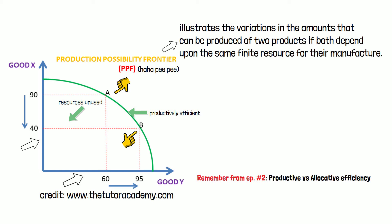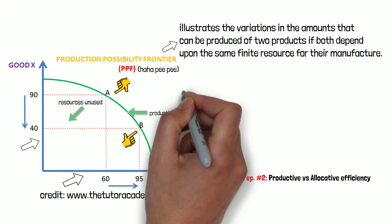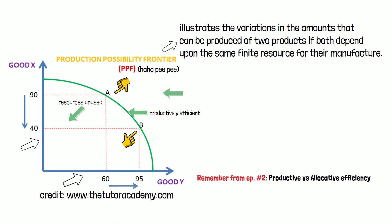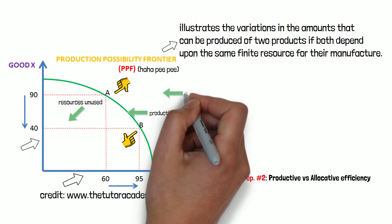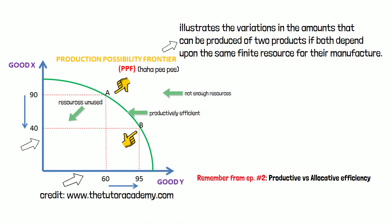If a point lies outside the PPF, it means that it is not achievable with the current level of resources in the economy. It would only be achievable with one thing: economic growth.